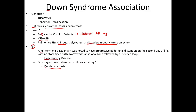A full-term male with trisomy 21 was noted to have progressive abdominal distension on the second day of life, with no stool since birth — failure to pass meconium. As you can see on the imaging, there is a narrowed transitional zone followed by a distended loop — that big megacolon. This is very characteristic of Hirschsprung's disease, which is an aganglionic colon.